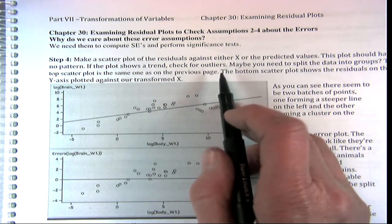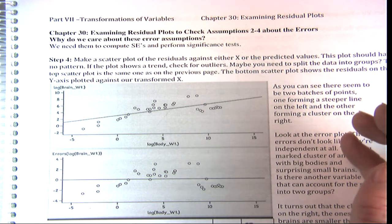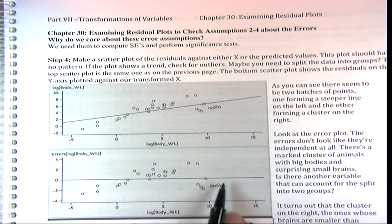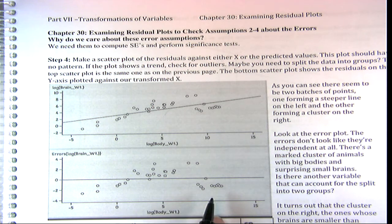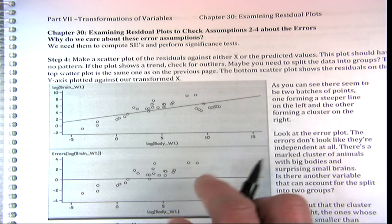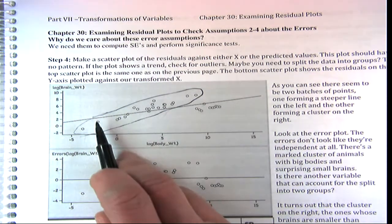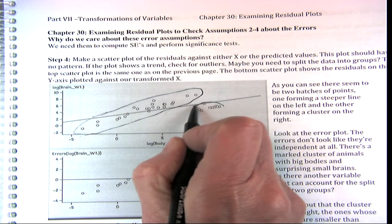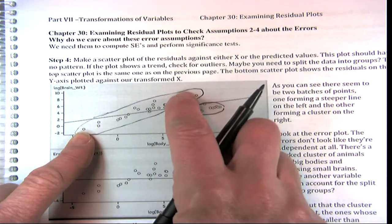The plot should show no pattern. If it shows a trend, you check for outliers. If the plot shows a trend, maybe it's an outlier, or like in this case, we should split the data into two groups.